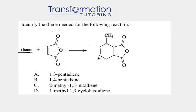Identify the diene needed for the following reaction. First we have to figure out what kind of reaction this is. One keyword in the question is 'diene,' and another key thing we see is that the product has a cyclohexene. Both of these factors tell us this is a Diels-Alder reaction, because a Diels-Alder reaction is a reaction between a diene and a dienophile that creates a cyclohexene.